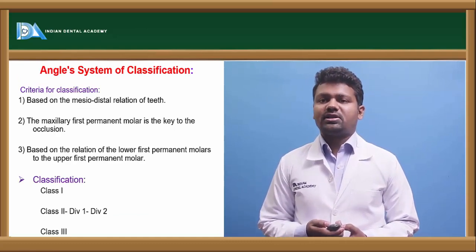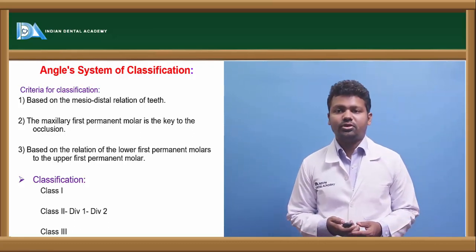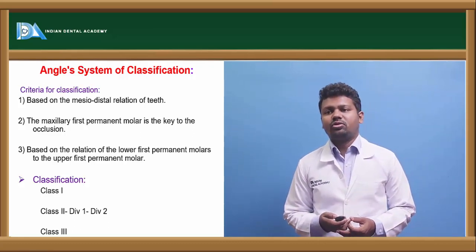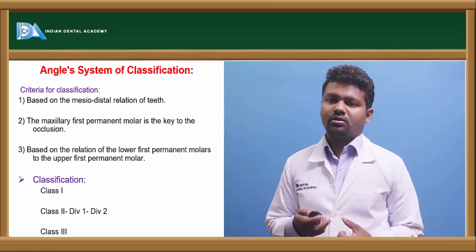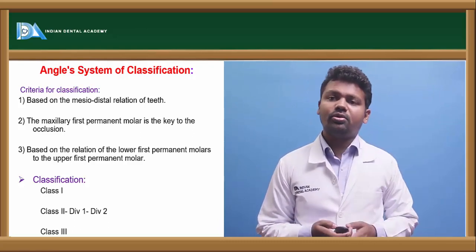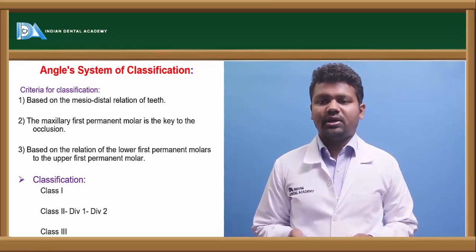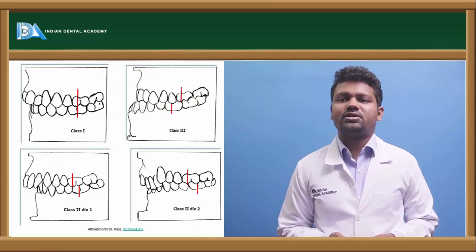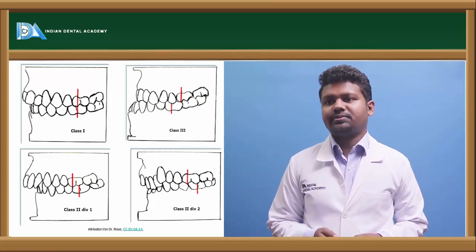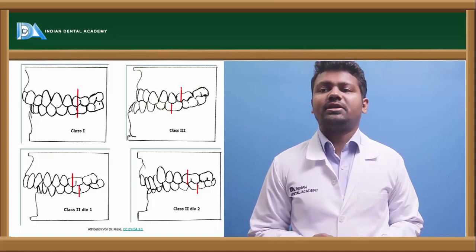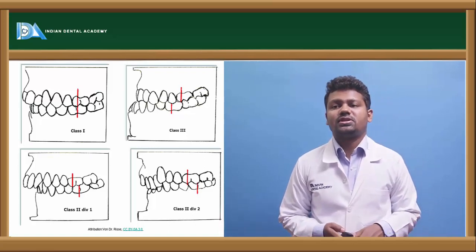Coming to Angle's classification, the criteria for classification is based on the mesiodistal relationship of the teeth. The maxillary first molar is the key to occlusion, based on the relation of the lower first permanent molar to the upper first molar. Classifications are Class 1, Class 2 Division 1, Class 2 Division 2, and Class 3. In Class 1, the mesial cusp should occlude in the mesial groove. In Class 3, the mesial cusp of the upper maxillary first molar is occluding between the interdental space of the first and second molars.